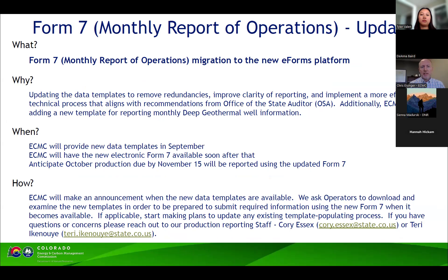We are going to be migrating this to our newer electronic forms platform in the coming weeks. This is something we've had on our priority list for a while. We need to make some changes to the data templates that operators use to provide information — this will help remove redundancies and improve the clarity of reporting. We're also wanting to align our processes with recommendations from the state auditor regarding improving production reporting. There is also a new data reporting requirement for operations associated with deep geothermal, and we'll be adding a section for reporting that to the new Form 7.